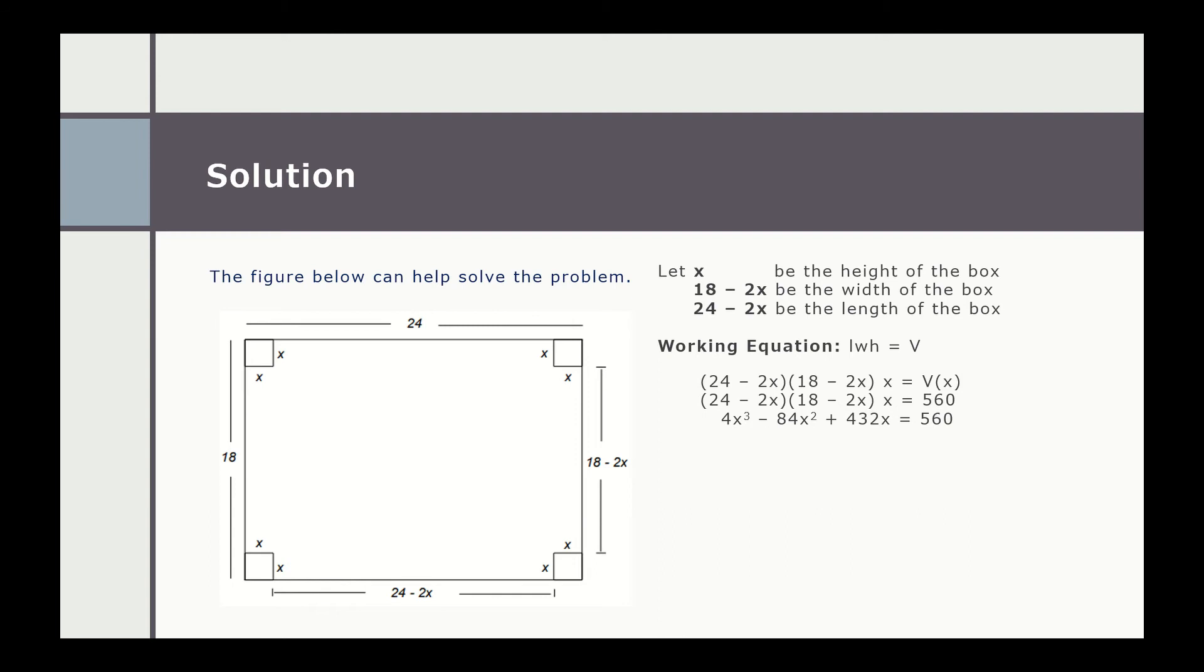Transposing 560, we have 4x³ minus 84x² plus 432x minus 560 equals 0. Since all the coefficients together with the constant term are divisible by 4, we divide both sides by 4 and that will give us x³ minus 21x² plus 108x minus 140 equals 0.